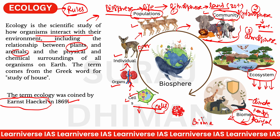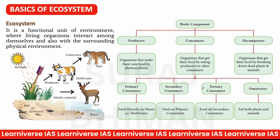पृथ्वी पर पूरे नौ types के biomes हैं। अगले कुछ lectures में biomes के बारे में भी बताऊंगा। Biomes के बाद जो complete life है वो biosphere कहलाती है। इस तरह से हम पूरे ecosystem की study करते हैं।